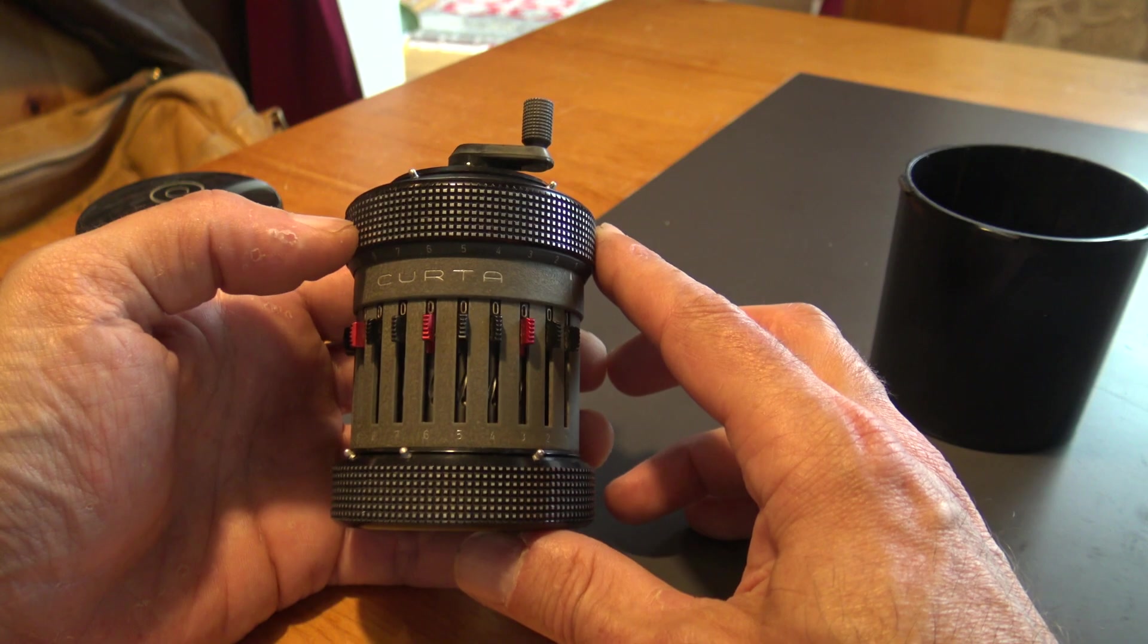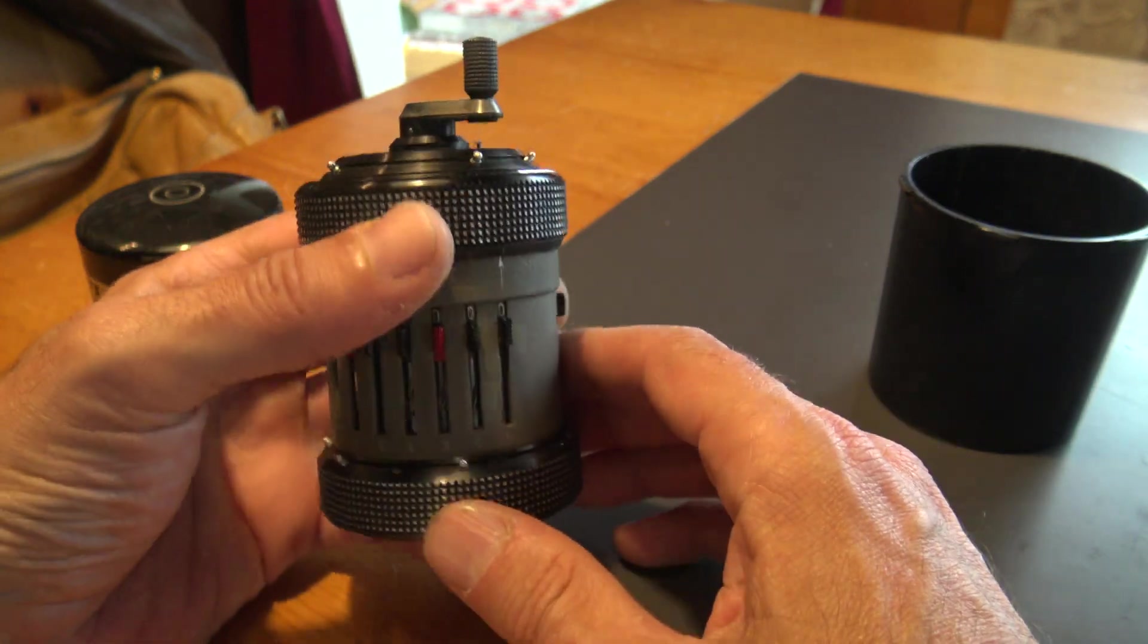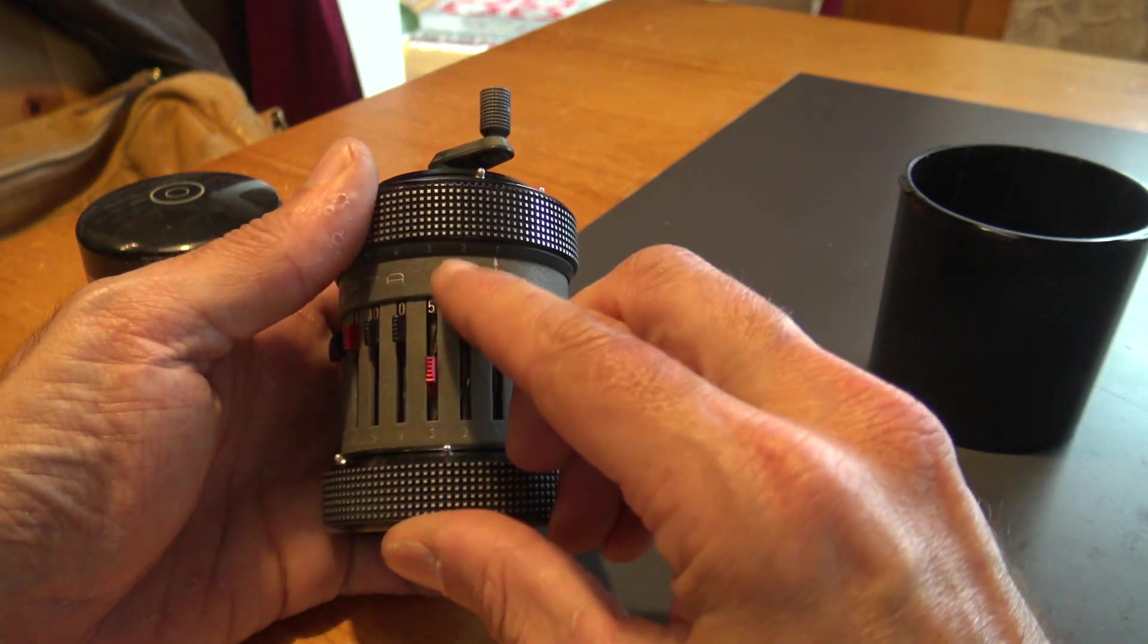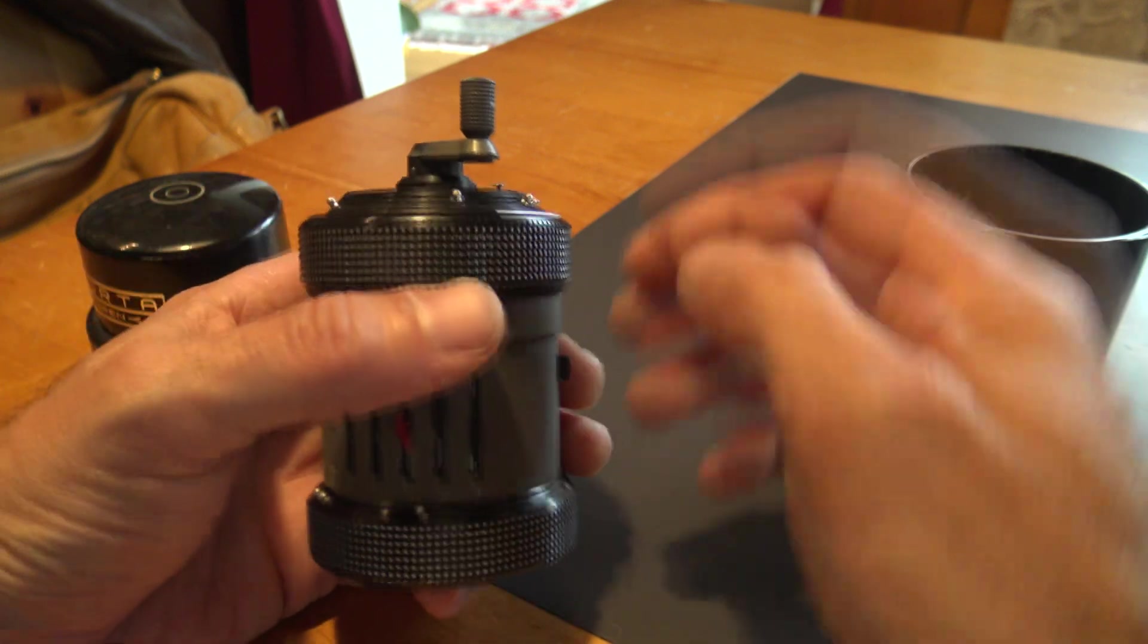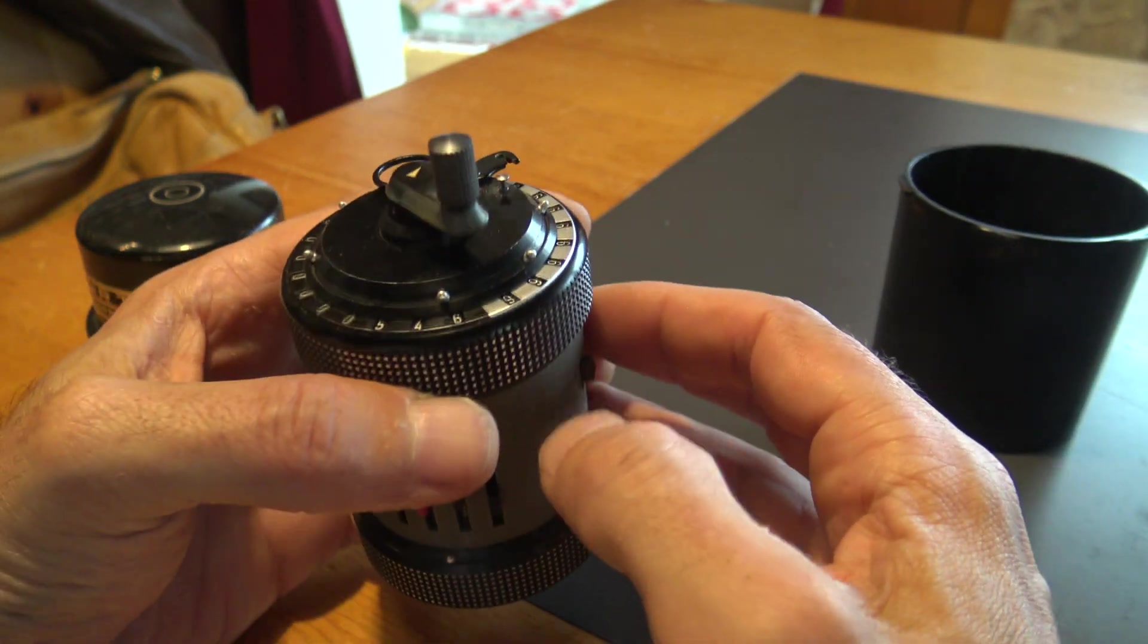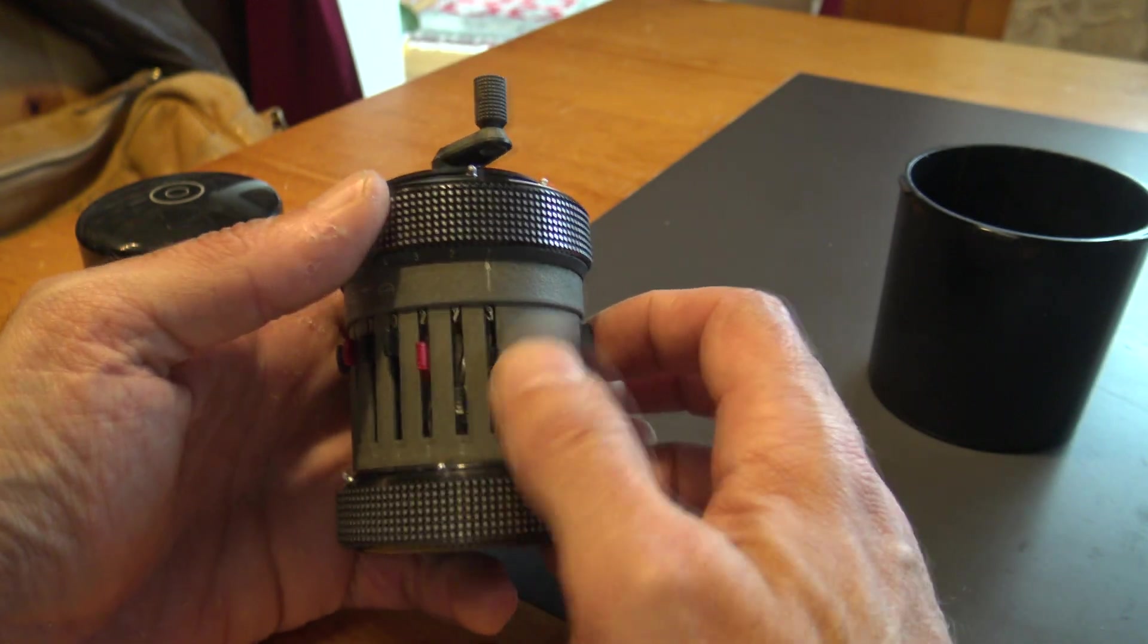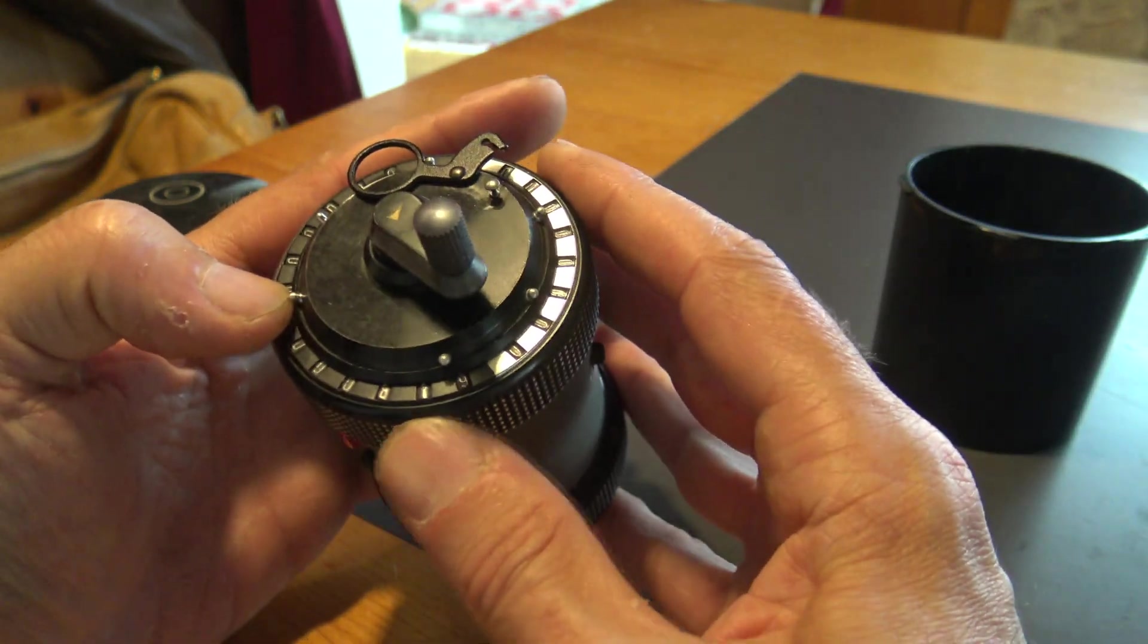So how does it work? Here is the input register. I can input the number by moving the sliders. I turn this little crank here and the number appears here. Now if I add a second number, I turn again and here I have the addition of the two: 819.